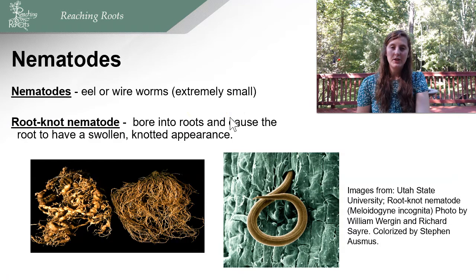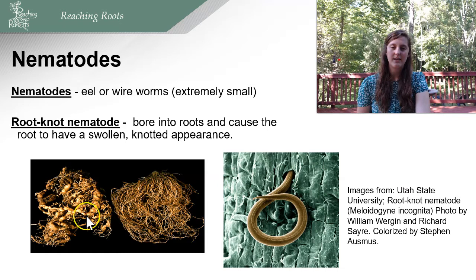Nematodes, or eel worms, are extremely small microscopic organisms. You can see in this microscope image a nematode entering the root. They cause a lot of damage but are often unseen because people don't usually dig up roots when seeing a pathogen problem. Root knot nematodes cause the root to develop a swollen, knotted appearance — this is a healthy root versus a root infected by nematodes.